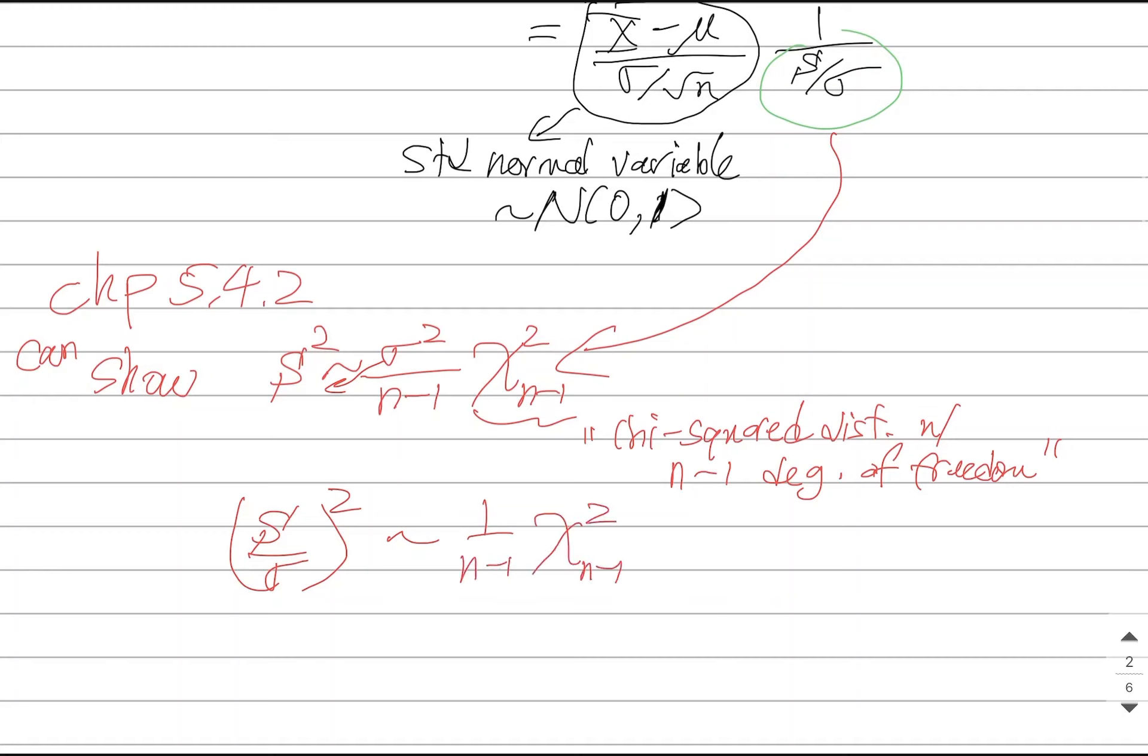It would be a 1 over n minus 1. And the reason that this is good is because I can say that this thing is distributed like the square root of this distribution. And that's good, because that's exactly what I've got in the denominator here.